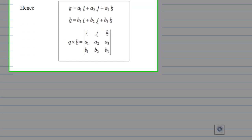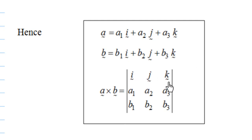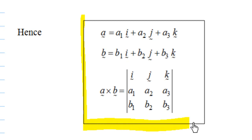So in short, whenever you have vectors A and B in terms of i, j, k, you can write A cross B as a 3 by 3 determinant with i, j, k in the first row, A1, A2, A3 in the second row, and B1, B2, B3 in the third row. For computational purposes, we use this formula.